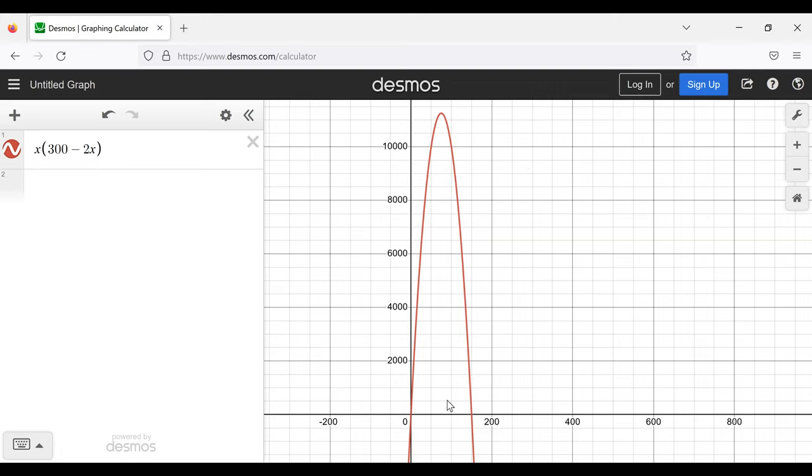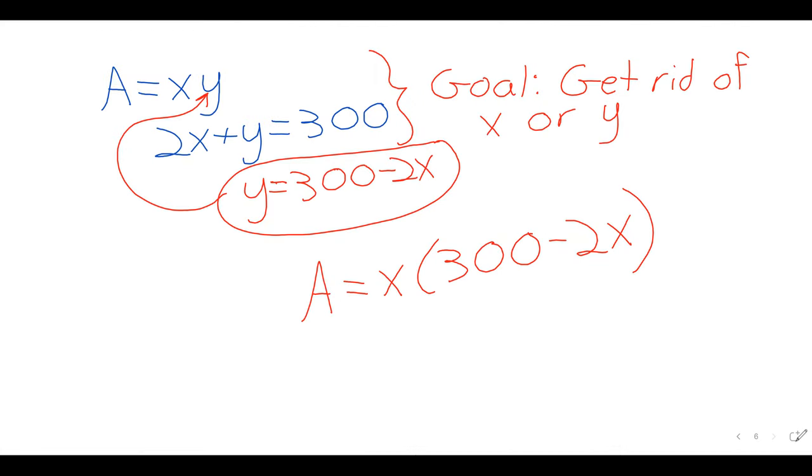We've got X times 300 minus 2X. We can't see much of anything, but if we mess around with our viewing window, here's what this area function looks like. There is a maximum, and this maximum is a local maximum. So we could find it using the first derivative. It looks like somewhere between 50 and 100 this maximum occurs. Let's see if we can find a critical value somewhere between 50 and 100.